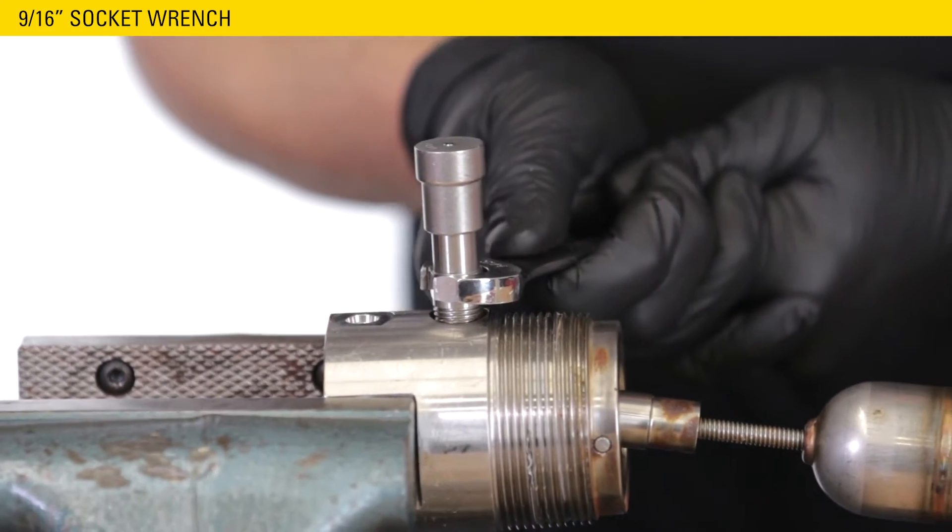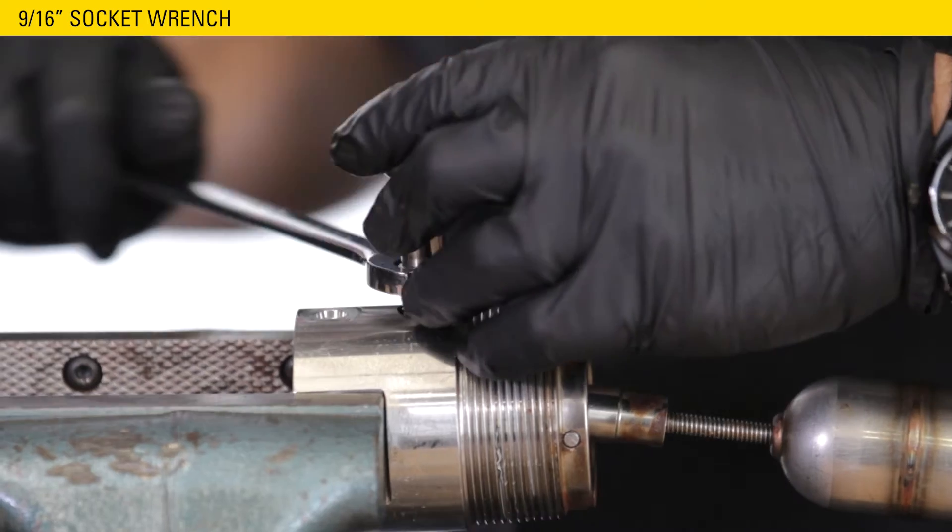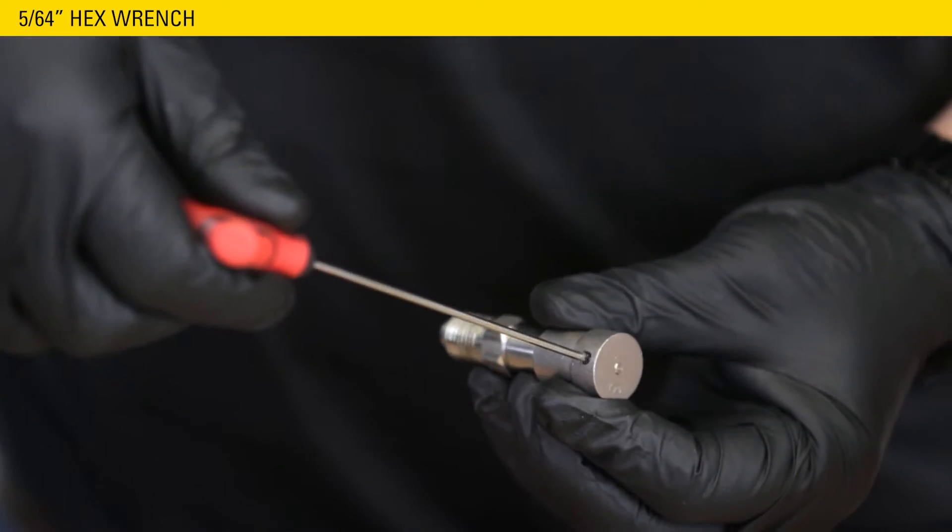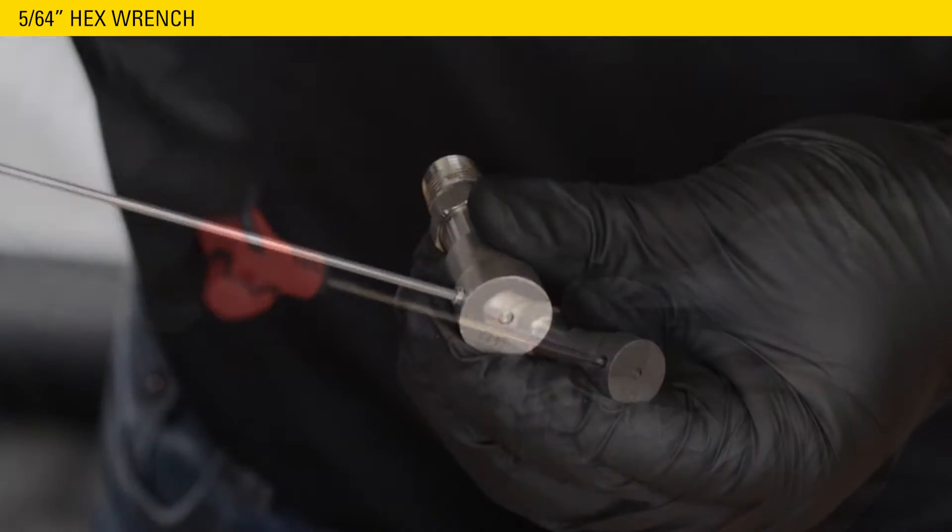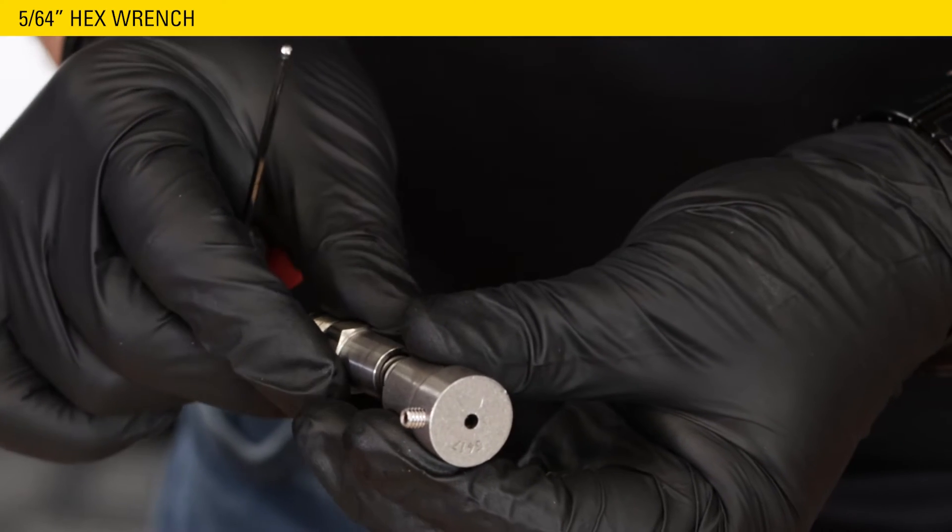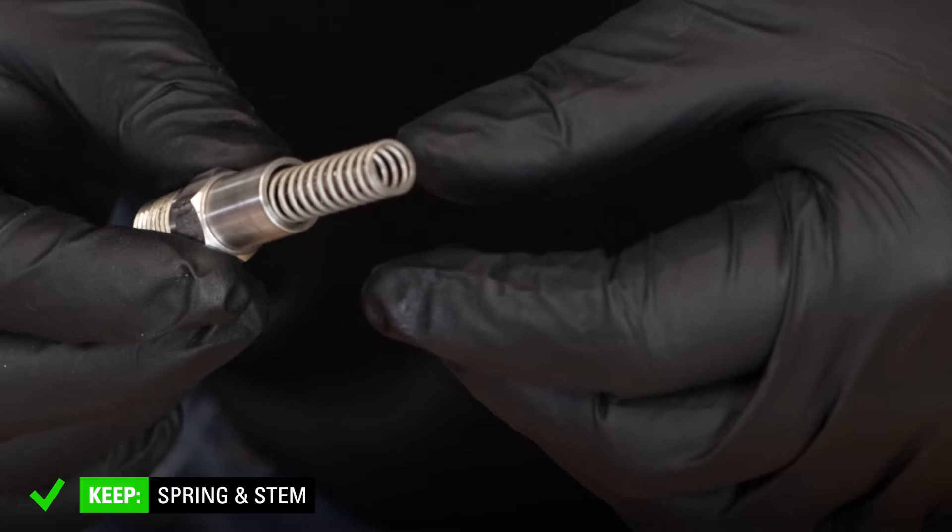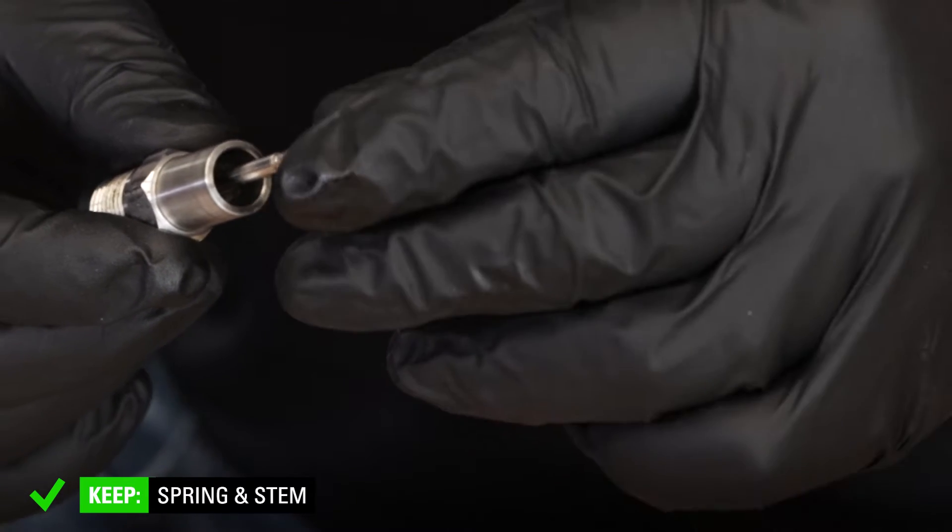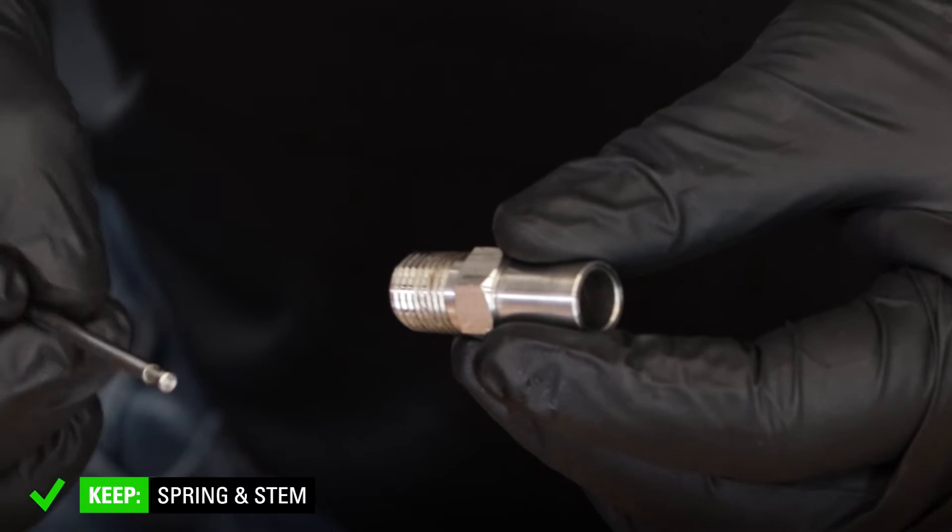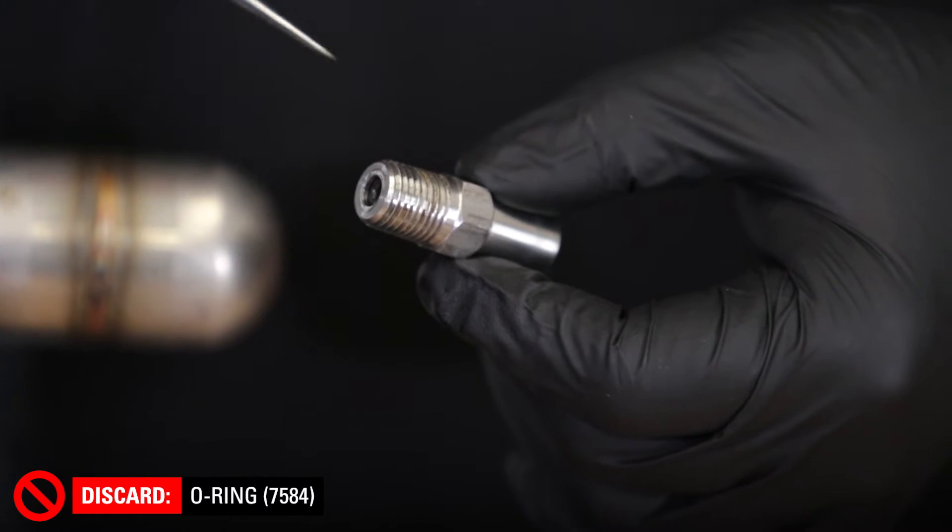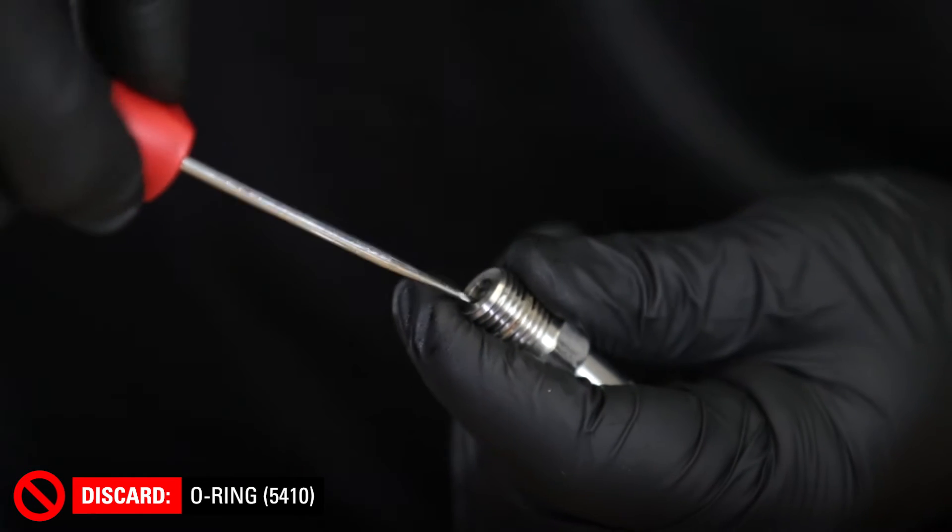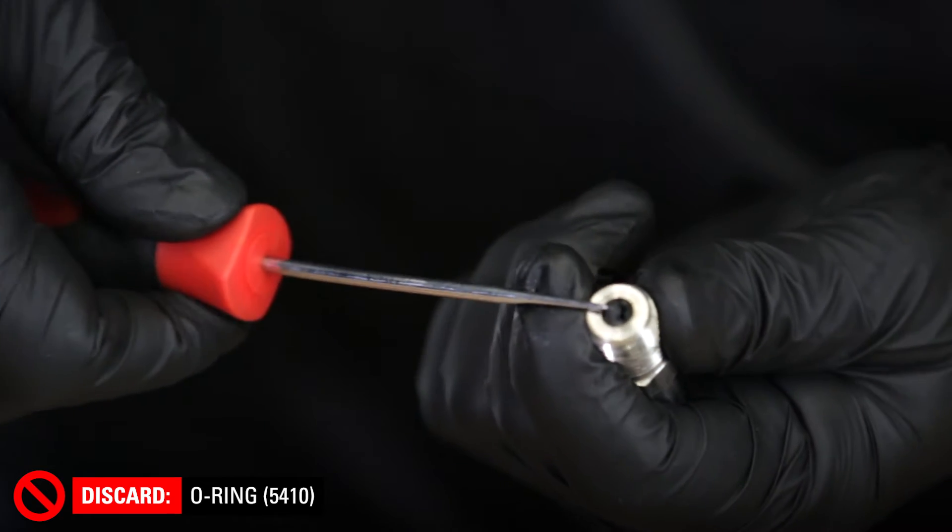Next, we'll disassemble the override fitting. Use a 9-16 wrench to loosen the override fitting. Use a 5-64 hex wrench to unthread the set screw and remove the cap. Now remove the spring and stem and set them aside. Remove and discard the O-ring from the threads on the override. On our level switch, the O-ring had disintegrated so there was nothing to remove. And lastly, use a straight pick to discard the O-ring located inside the override.